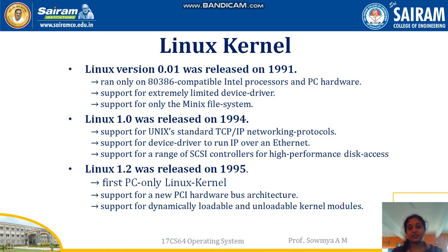Linux kernel versions have evolved over the years from basic to the latest releases. Linux version 0.01 was released in 1991, which could run only on 80386 compatible Intel processors and PC hardware, supporting only extremely limited device drivers and file systems. Linux 1.0 was released in 1994, adding support for standard networking protocols like TCP/IP, Ethernet, and more compatible device drivers.